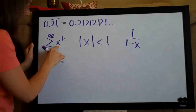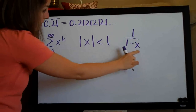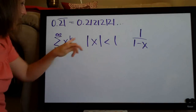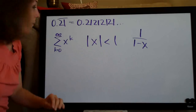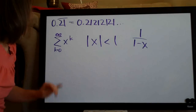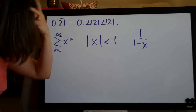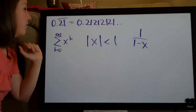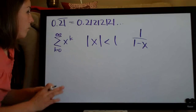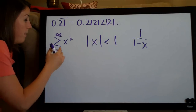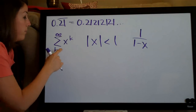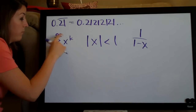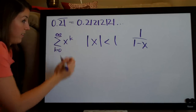If it converges, we can find its sum using 1 over 1 minus x. These three x's are the same in each case — once we find x, we can apply it to both parts of the formula. So the first thing we have to do with this series is figure out whether it takes the form x to the k.